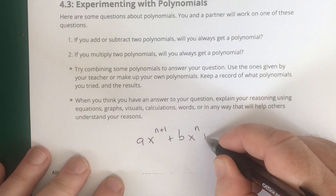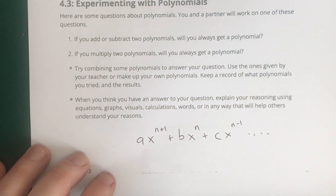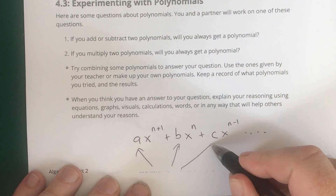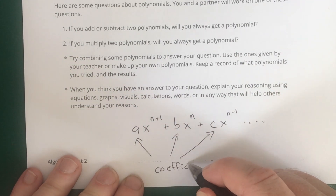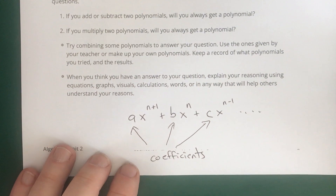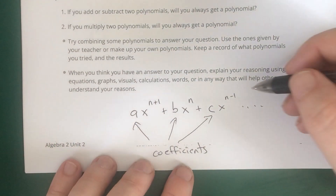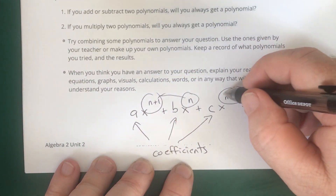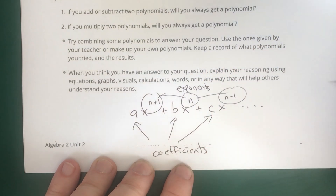Capital A is an even number because it's 2 times little a — if you divide it by 2, you get a, which is an integer. The definition of an even number is a number where if you divide it by 2, you get an integer. Since little a and little b are both integers, and if you divide capital A or capital B by 2 you get little a or little b, then both capital A and capital B are even numbers. So what happens if you add capital A to capital B? Do you get an even number?